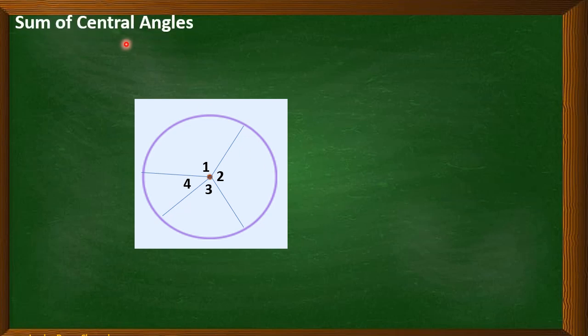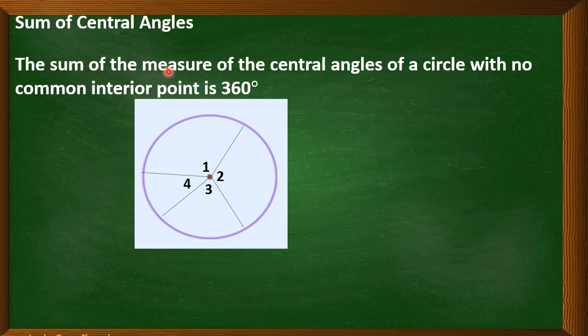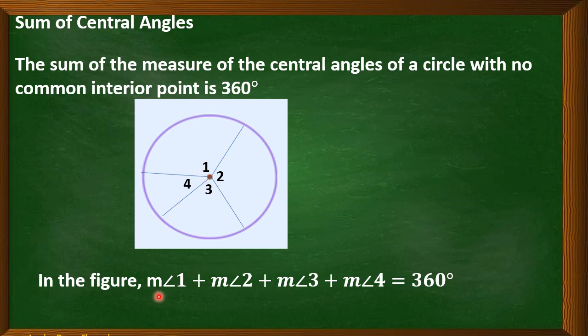Now, let's have the sum of the central angles. Always remember that the sum of the measure of the central angles of a circle with no common interior point is always 360 degrees. In here, we have four angles. Namely, angle one, angle two, angle three, and angle four. By the way, in naming an angle, we can name an angle using a number, using three points, and using one point that is on a vertex. In here, we name the angle by using a number. In the given figure, it means that the measure of angle one plus measure of angle two plus measure of angle three plus measure of angle four is equal to 360 degrees.